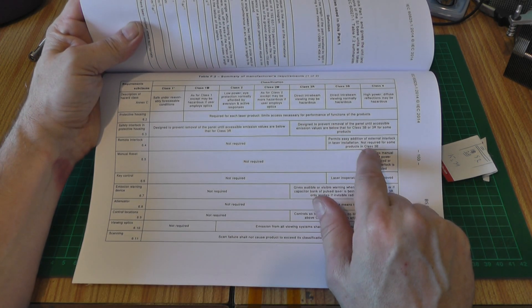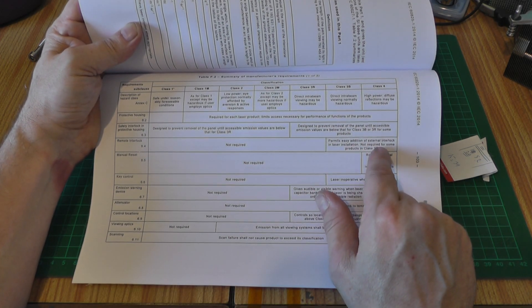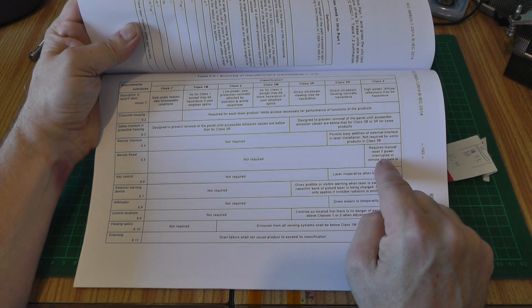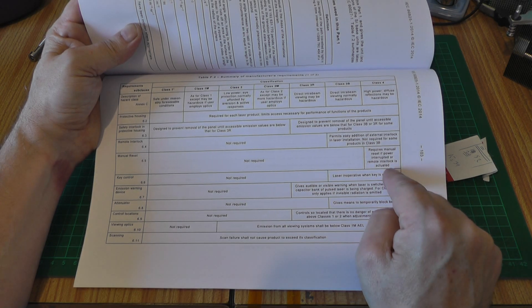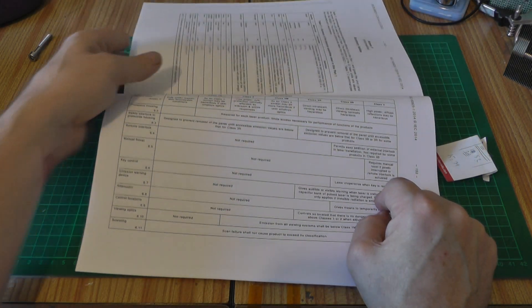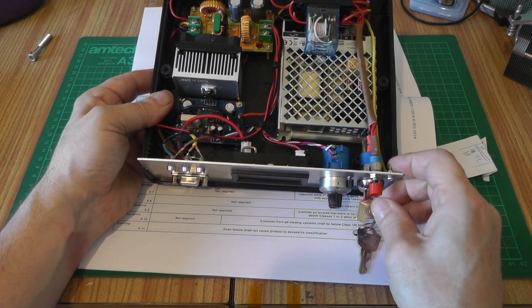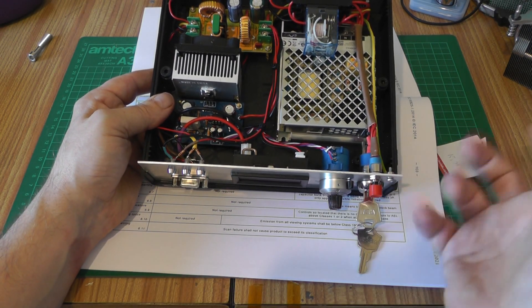It has some additional stuff. So it says you have to have a remote interlock. It permits easy addition of external interlock into laser installation. Also, it says manual reset. It requires a manual reset if the power is interrupted or remote interlock is actuated. And that's exactly what this was all about with the button on the front. So if power is interrupted it turns off, or if I plug it in, it is always in the off state. And only if you turn the key and press the button will the laser become active.